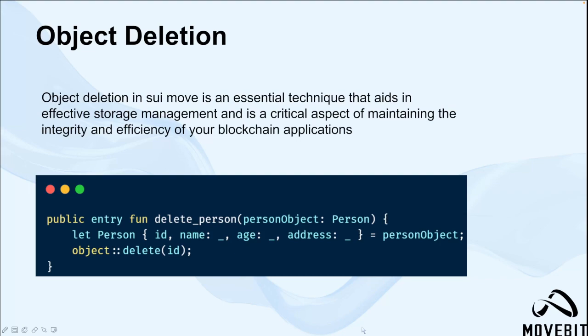First of all, object deletion in Sui Move is not as straightforward as merely removing an object from memory. Given the blockchain's nature, a system must be in place to manage the elimination of objects along with correlated data. Here is an example of deleting the object by using the object delete API to accomplish that.